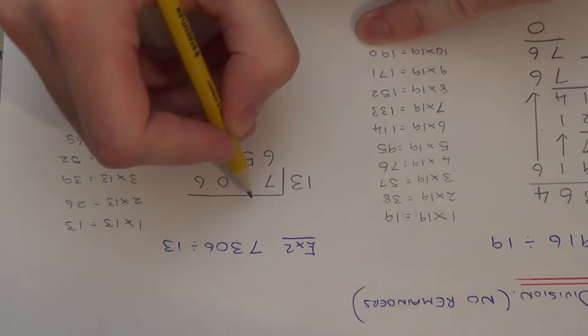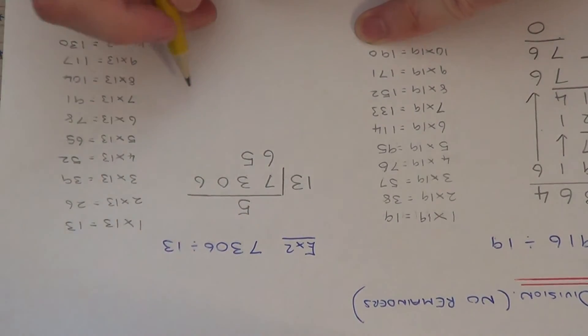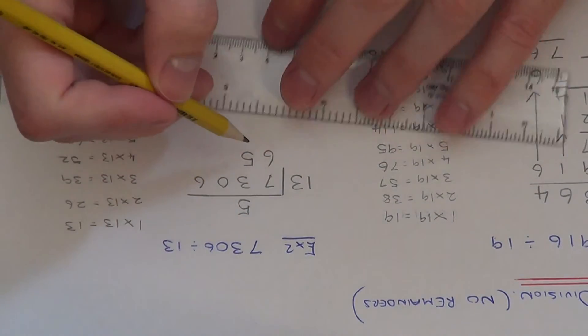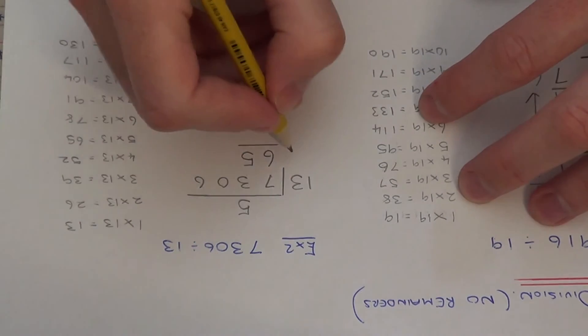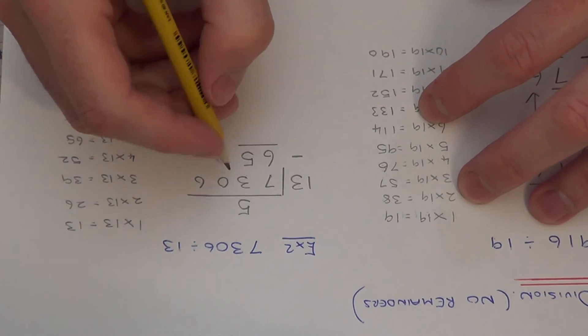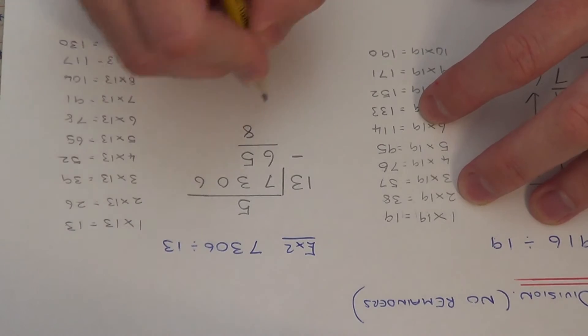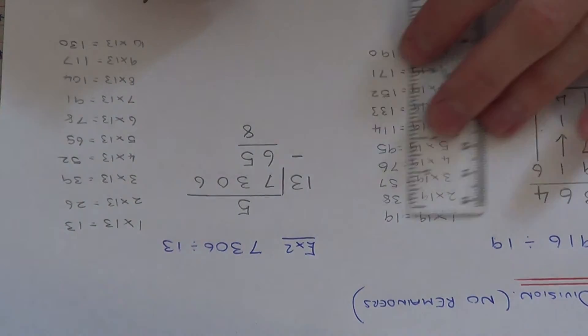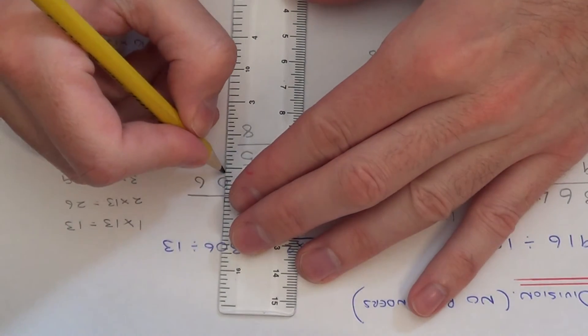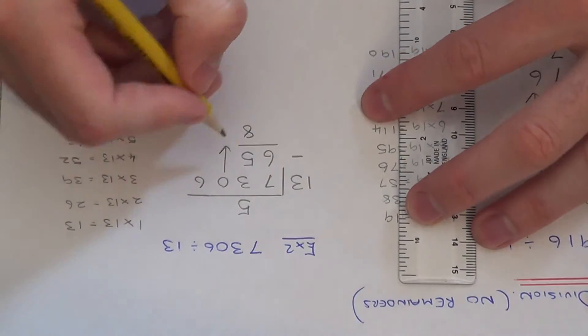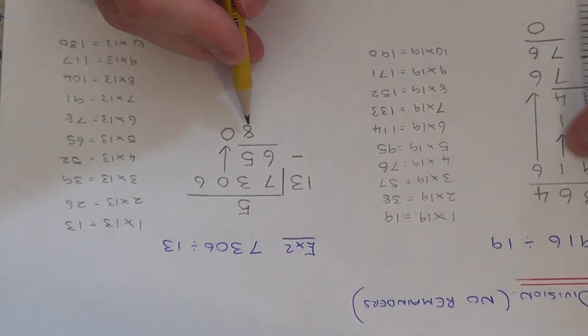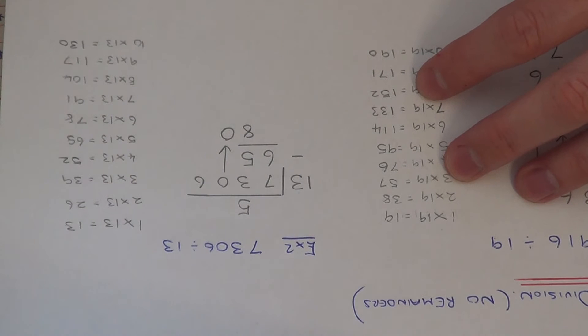So that's 5 times 13. So if we write 65 underneath the 73, and put the 5 at the top. So now we just need to take 65 from 73. So that will give 8. So next bring down the 0 from the top.